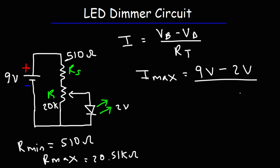So we need to use the minimum resistance to get the maximum current, so that's going to be 510. 7 volts divided by 510, that's equal to 0.0137 amps. If you multiply that by 1,000, this will give you the current in milliamps. So the maximum current that can flow in the circuit is 13.7 milliamps.